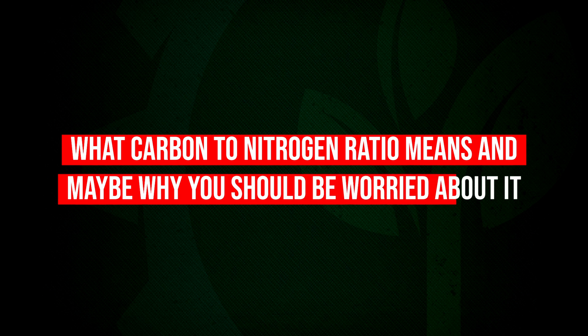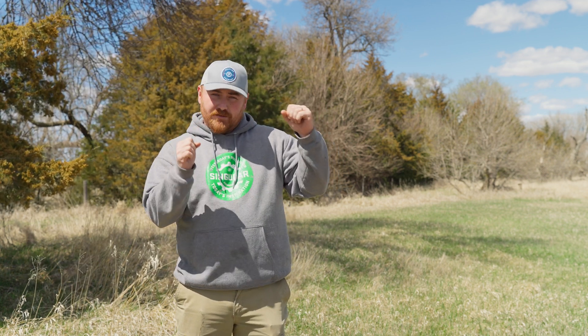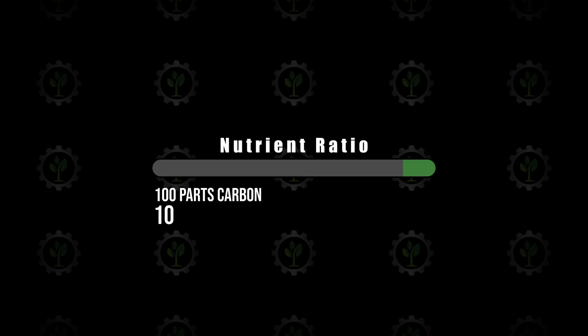We're here to talk about carbon to nitrogen ratio. Before we dive deeper into this series, maybe just talk about what carbon to nitrogen ratio means and why should we worry about it. Carbon to nitrogen ratio is how many parts carbon to parts nitrogen. So if you have 100 parts carbon and 10 parts nitrogen, that would be a 10 to 1 ratio. This ratio tells us, based on the amount of carbon in the soil, what could happen with our nutrients and what's going on with the biology. This first video we're going to really focus on when our carbon to nitrogen ratio is low and what that means to us as producers.